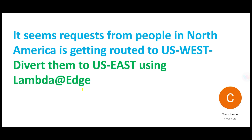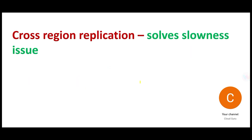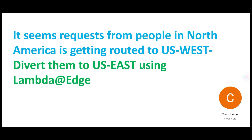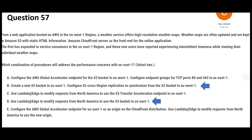So we had two pain points and we solved both. First, cross-region replication solves the slowness by ensuring files are present in both US West and US East. Second, we divert North American traffic to US East using Lambda@Edge. These are the two correct answers.